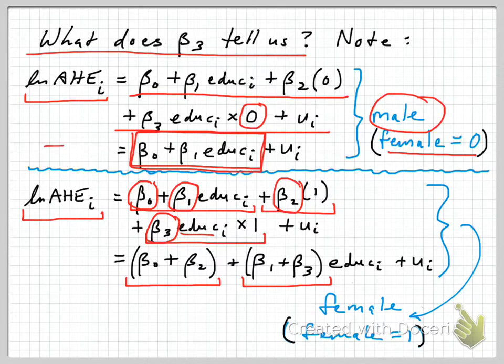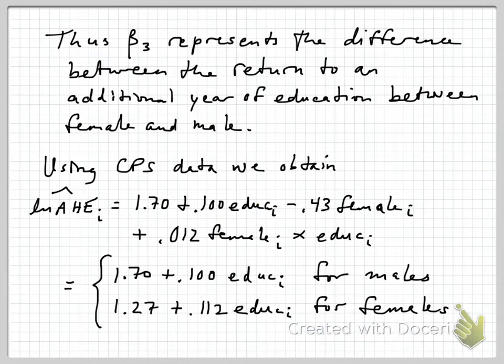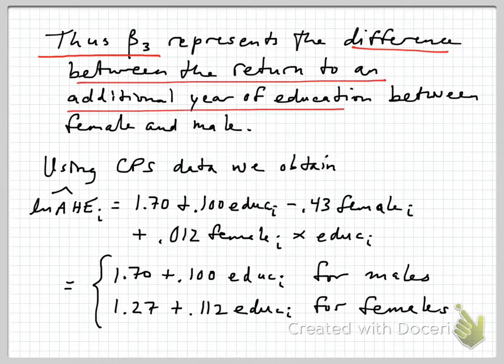Comparing these two, the male equation and the female equation, we can see that we have these additional factors that are represented by these coefficients in the female case. Beta 2 represents how the intercept is different for females compared to males, and beta 3 represents how the slope is different. Beta 3 is often the thing that we're most interested in. That's the coefficient on the interaction, and that represents the difference between the return to an additional year of education between males and females.